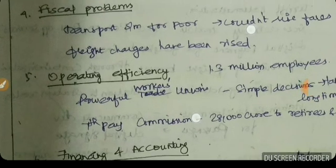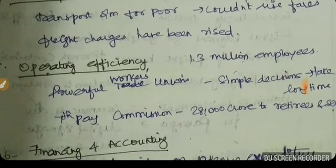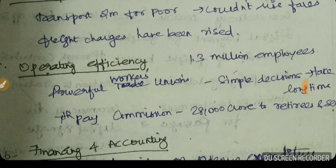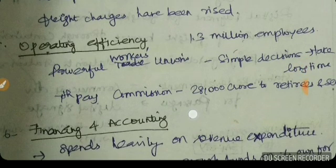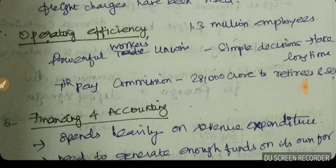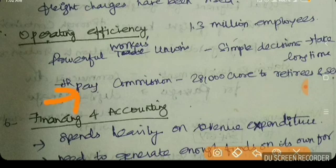Fifth, operating efficiency: railways employ 1.3 million workers, making it one of the largest employment sectors. Powerful worker unions affect decision-making and cause delays. The 7th Pay Commission added 28,000 crore in pension liabilities for retirees, further reducing efficiency.